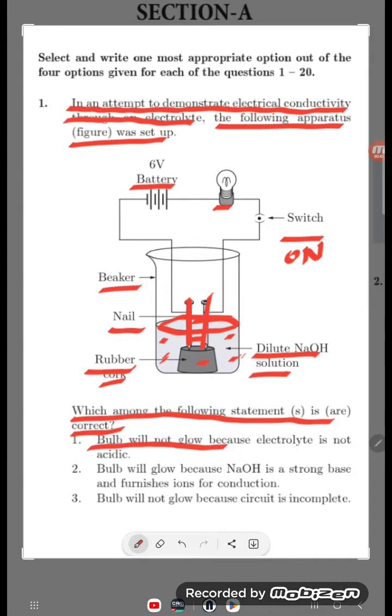Bulb will not glow because electrolyte is not acidic - that is wrong because NaOH is a strong base. Bulb will glow because NaOH is a strong base and furnishes ions for conduction. This is the correct one.